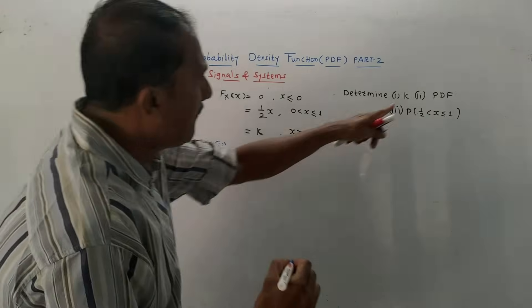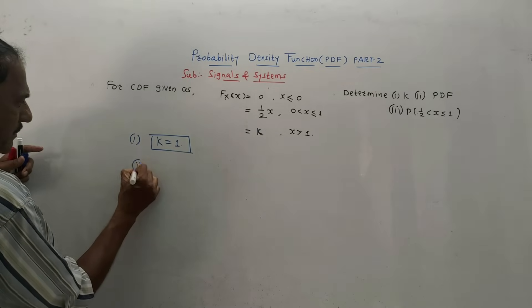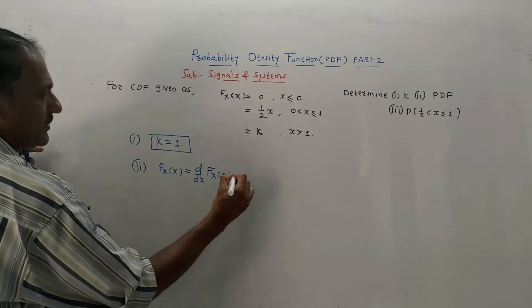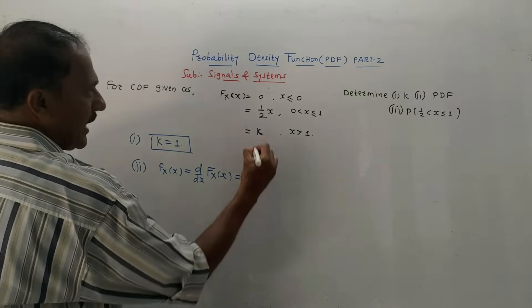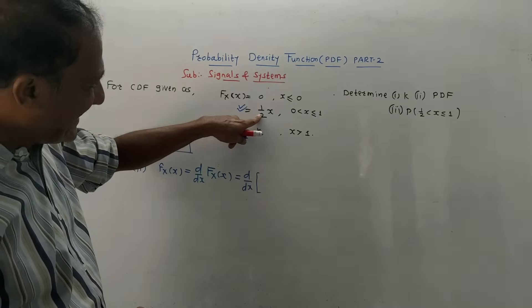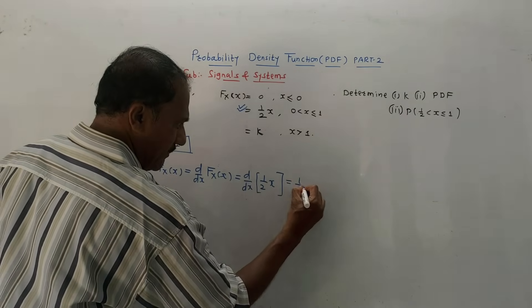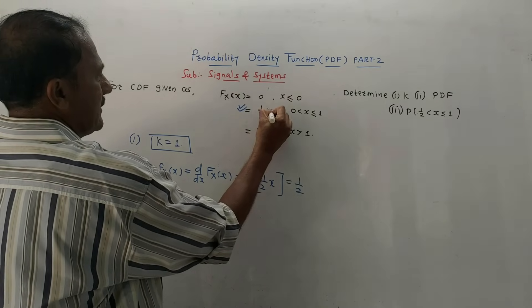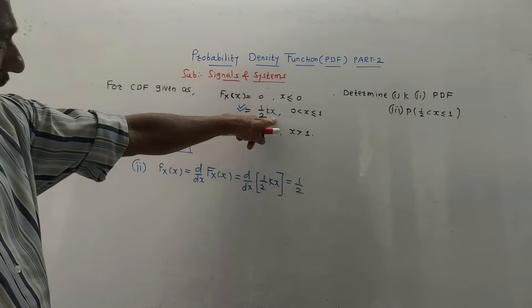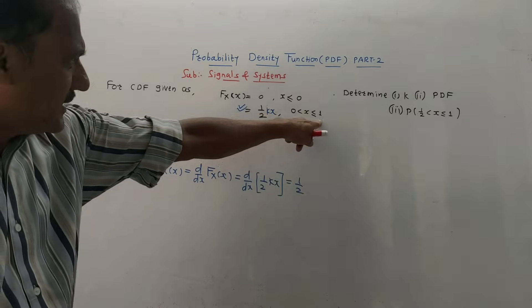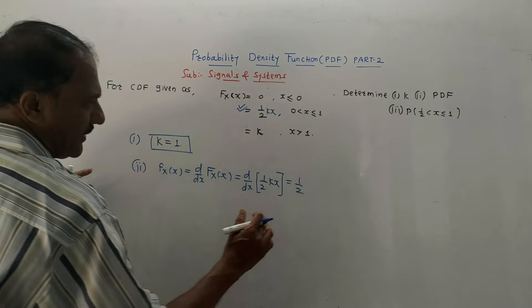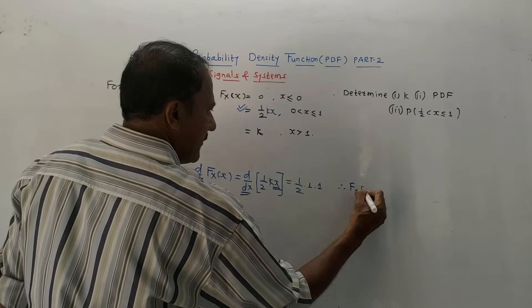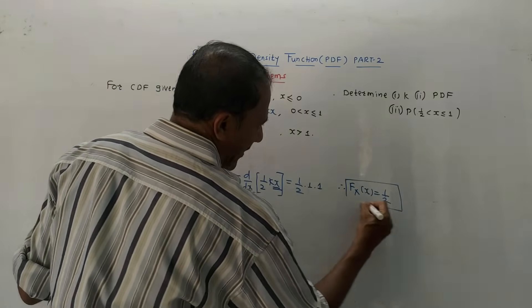Second part, calculate the PDF. PDF is small f(x) = d/dx of CDF capital F(x). We consider the variable term, which is one-half·K·x. Taking the derivative, 1/2·K·d/dx of x gives 1/2·K·1. Since K equals 1, this is simply 1/2. Therefore, small f(x) equals 1/2. This is the value of the PDF, a constant 1/2 in the range 0 to 1.